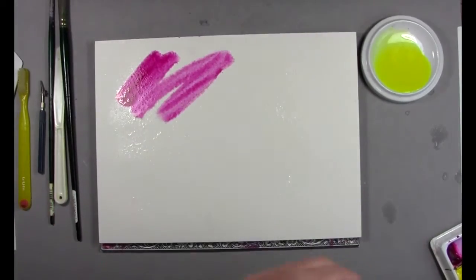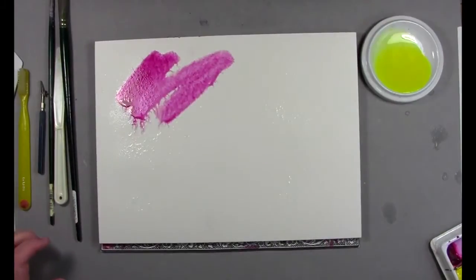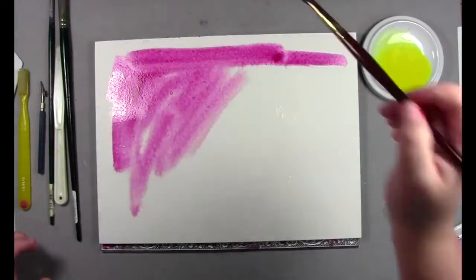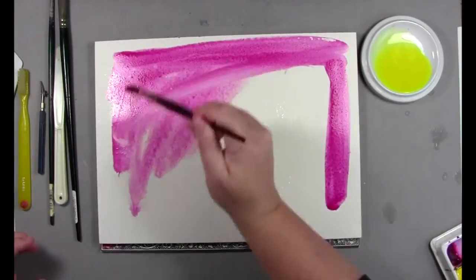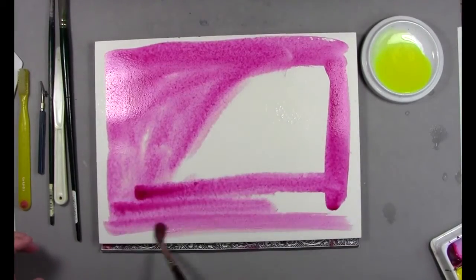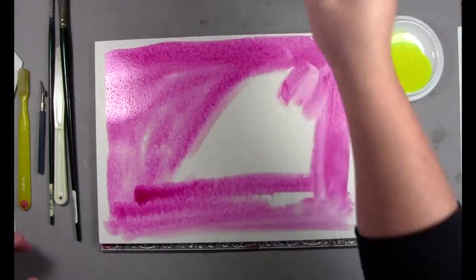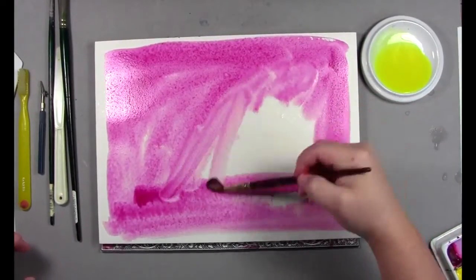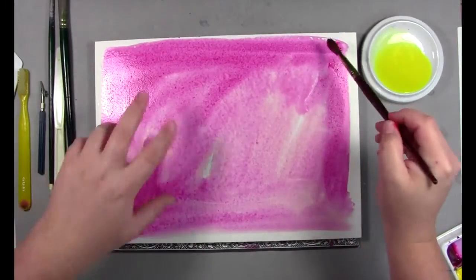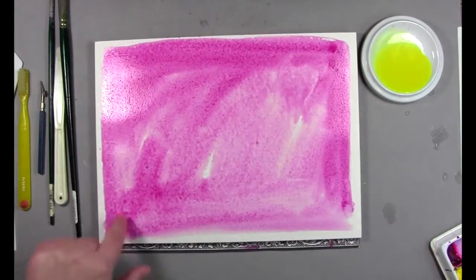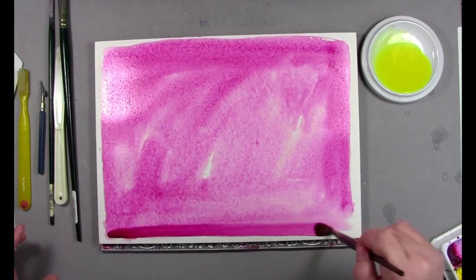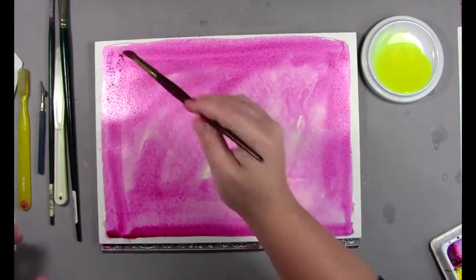So I'm putting a wash down of permanent magenta. Permanent magenta is gonna separate a little bit so it's gonna give a little bit of texture. You can see it separating out a little bit on its own. Big fan. I love permanent magenta. It's such a bright shiny color.